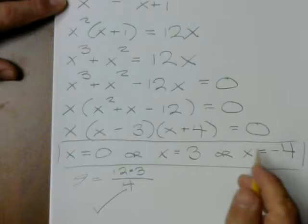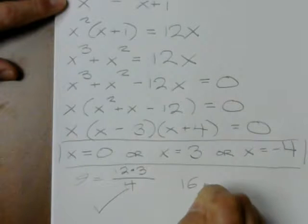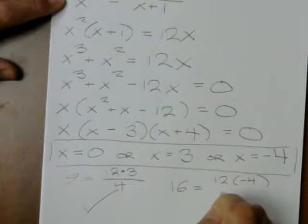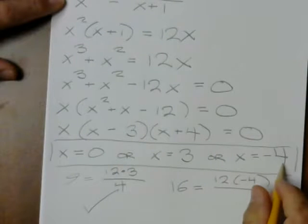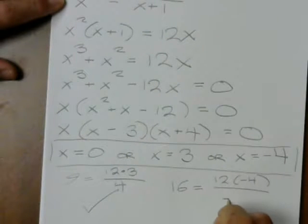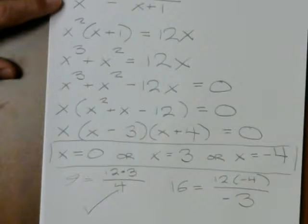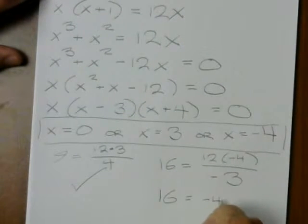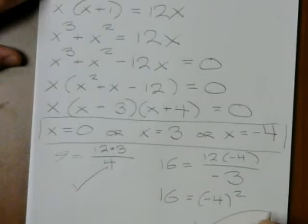And at minus 4, what do I get? 16 equals 12 times minus 4. Well, minus 4 plus 1 is minus 3. So let's look at this. Well, 12 over minus 3 is minus 4. Is it true that 16 is equal to minus 4 squared? Sure.